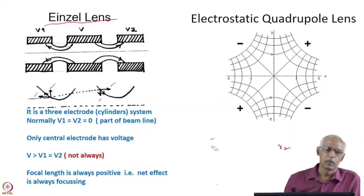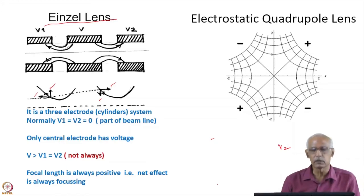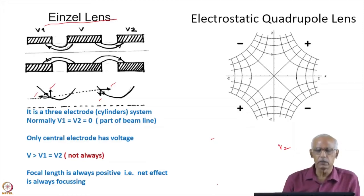The only problem is that the voltage V on the central electrode has to be pretty high if you want to go to higher energies. Therefore, these Einzel lenses are mainly used for lower energies. But they are very accurate, very simple, very cost-effective, and in general are used for low-energy accelerators, where they very effectively focus the beam.